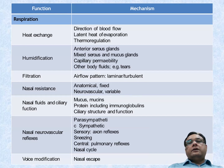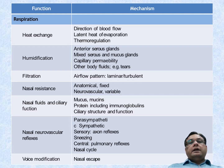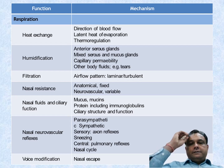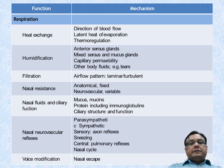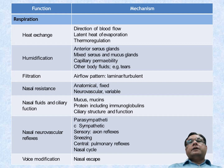The functions in detail: first is heat exchanger — direction of blood flow, latent heat evaporation, and thermoregulation. Humidification involves inferior serous glands, mid-serous and mucous glands, capillary permeability and other volatile body fluids. Filtration involves airflow patterns, laminar or turbulent; nasal resistance can be anatomical (fixed) or neurovascular (variable). Nasal fluids and ciliary function mainly depend on mucus proteins including immunoglobulin, ciliary structure and function. Nasal neurovascular reflexes: parasympathetic, sympathetic, sensory, axon reflexes, sneezing, nasal-pulmonary reflexes, nasal cycle, and voice modification.